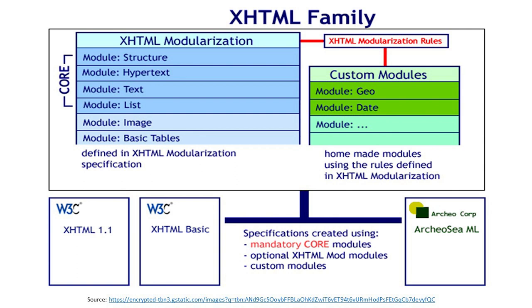This is the XHTML family. This diagram depicts all the custom modules in the XHTML family: specifications created using mandatory core modules, then optional XHTML modules, then custom modules. The diagram shows core modules, XHTML 1.1, and XHTML Basic from the W3C consortium. The core module contains structure, hypertext, text, links, images, basic tables, and so on.